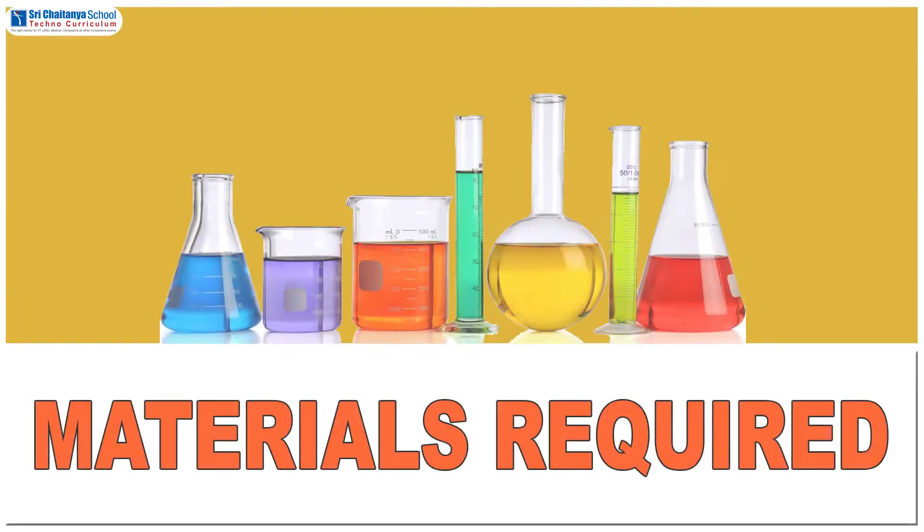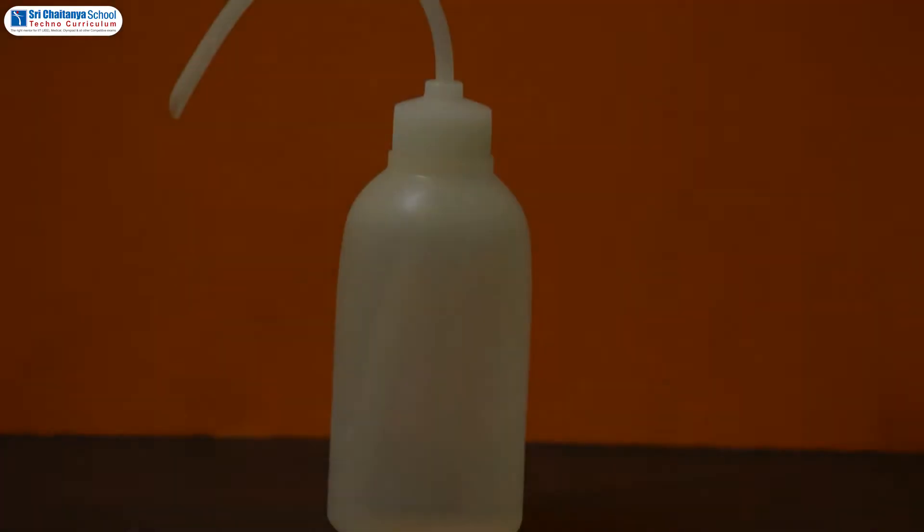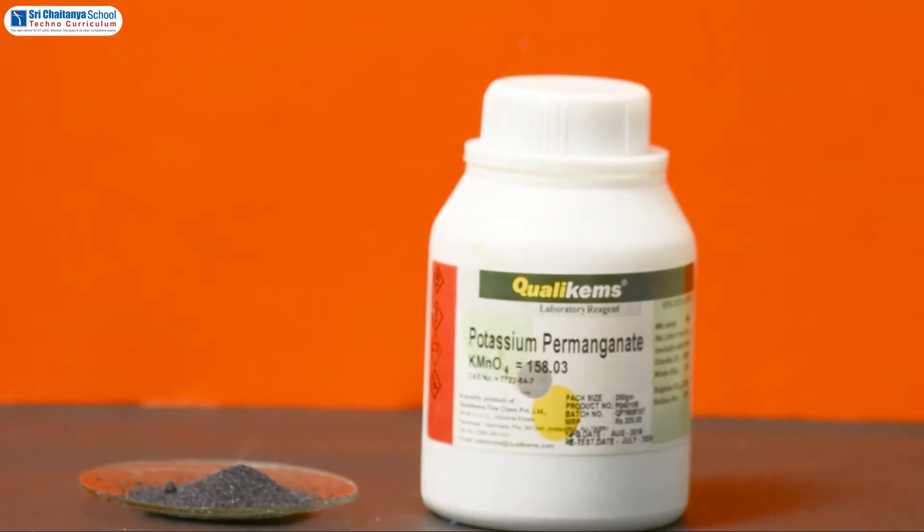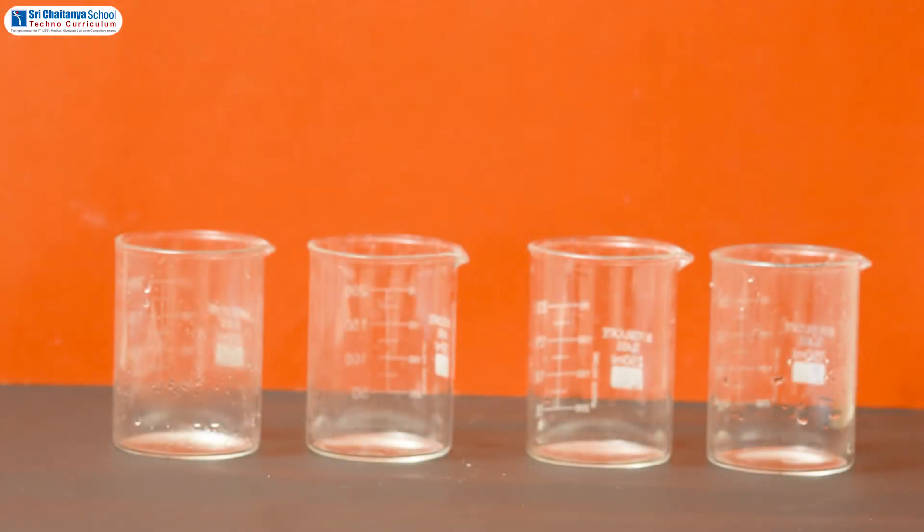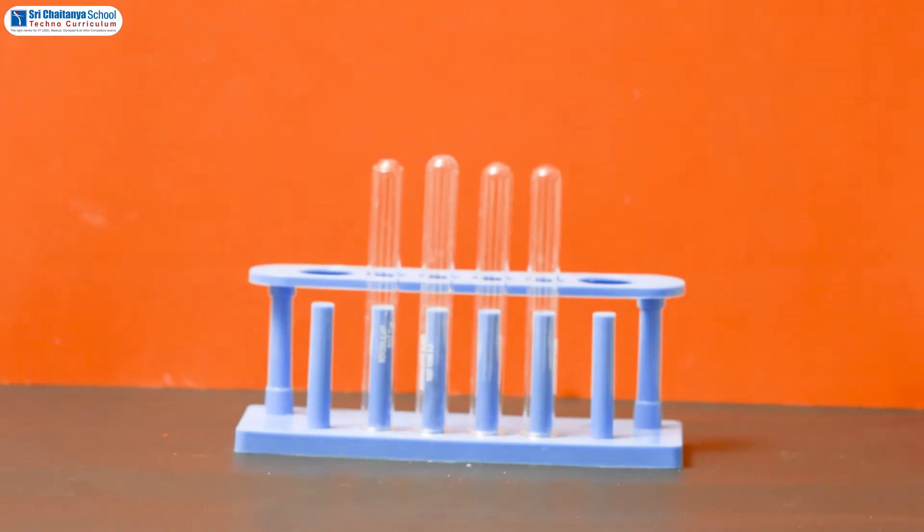The materials that are required: water, a few crystals of potassium permanganate, 4 to 5 beakers, and finally 3 to 4 test tubes.